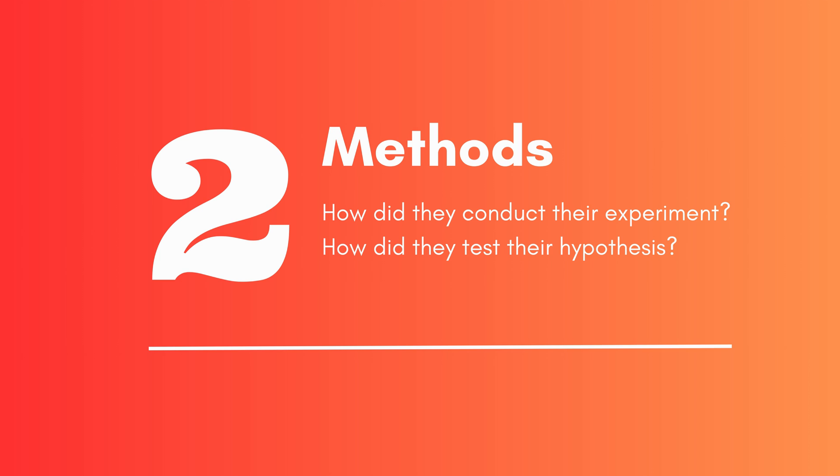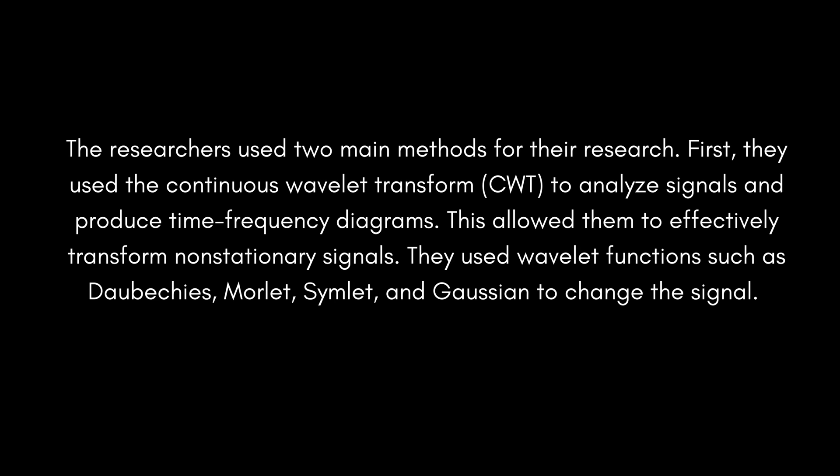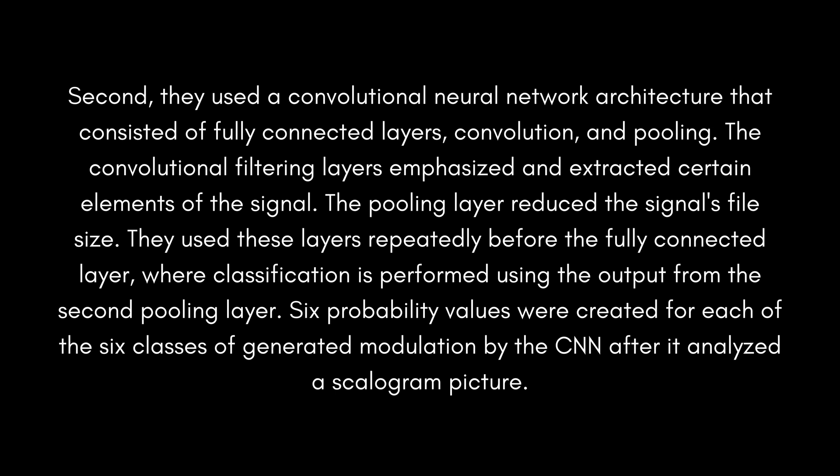How did they conduct their experiment? The researchers used two main methods. First, they used the continuous wavelet transform (CWT) to analyze signals and produce time-frequency diagrams, effectively transforming non-stationary signals. They used wavelet functions such as Daubechies, Morlet, Symlet, and Gaussian to transform the signal. Second, they used a convolutional neural network architecture consisting of fully connected layers, convolution, and pooling. The convolutional filtering layers emphasized and extracted certain signal elements, while the pooling layer reduced file size. These layers were used repeatedly before the fully connected layer, where classification is performed using output from the second pooling layer. The CNN analyzed a scalogram picture and produced six probability values — one for each of the six modulation classes.